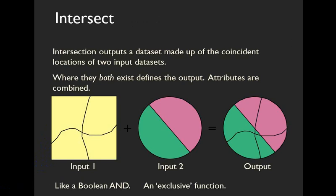Another way to overlay vector data is using the intersect tool. Intersection is like a Boolean AND. It's an exclusive function, meaning that when you combine two data layers using intersect, the output maps the location of overlap between the two datasets.